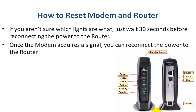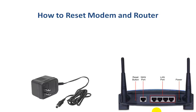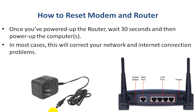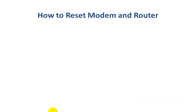Once the modem acquires a signal, reconnect the power to the router. Here's the power connector — you just plug it into the power jack. Once the router is powered up, wait another 30 seconds, and then you can power up your computers as you normally would. In most cases this will correct your network and internet connection problems.